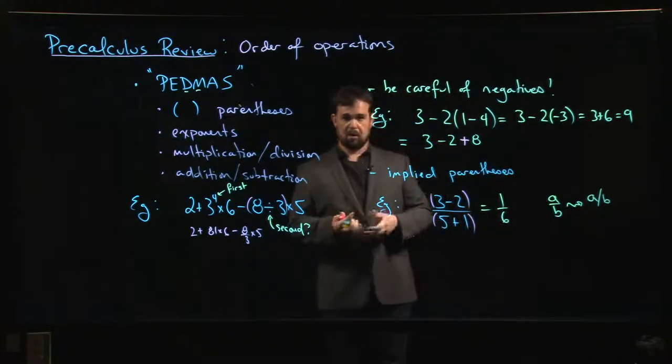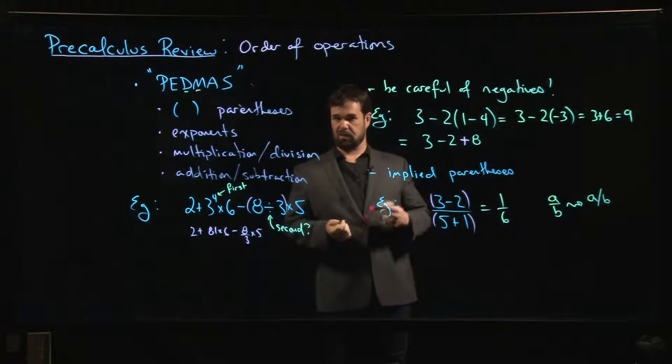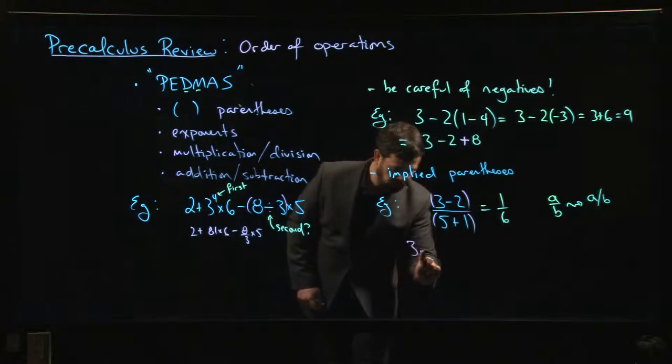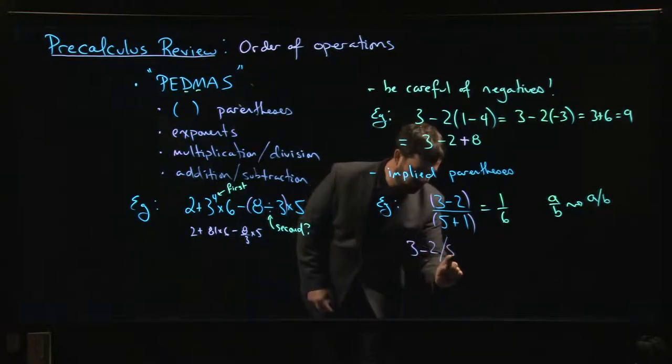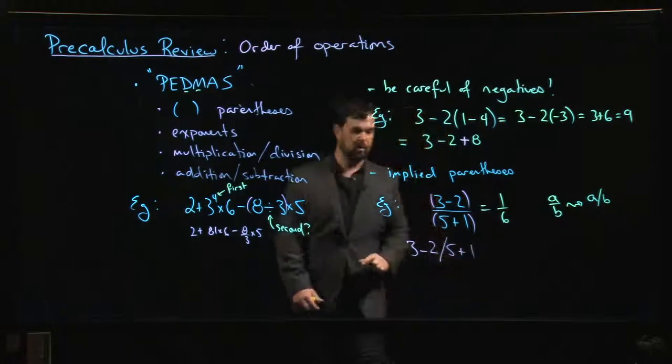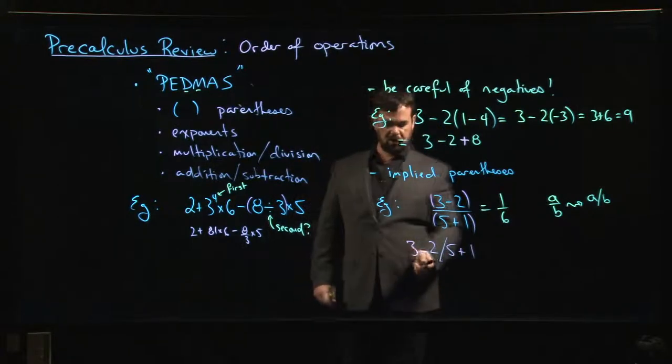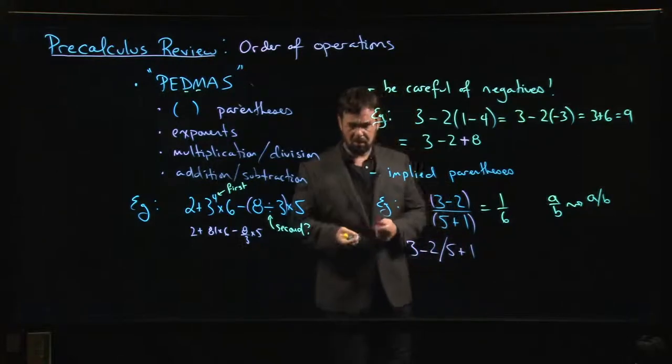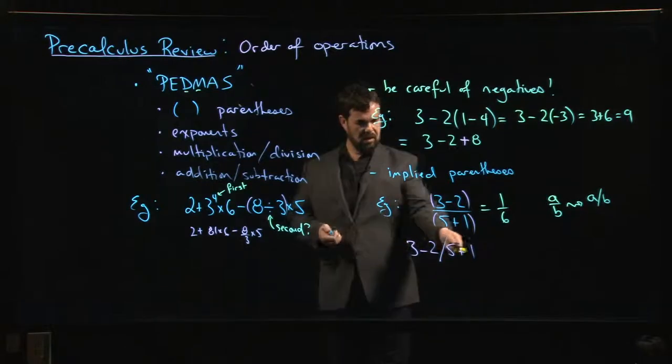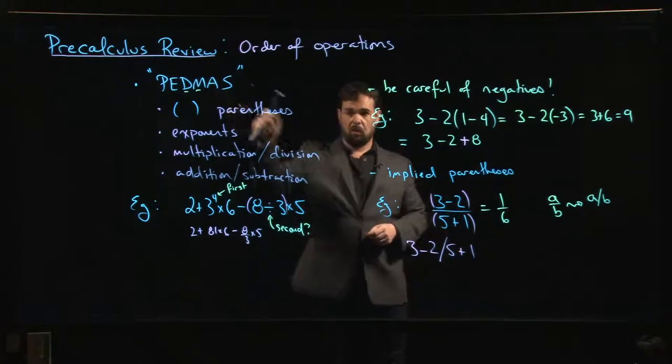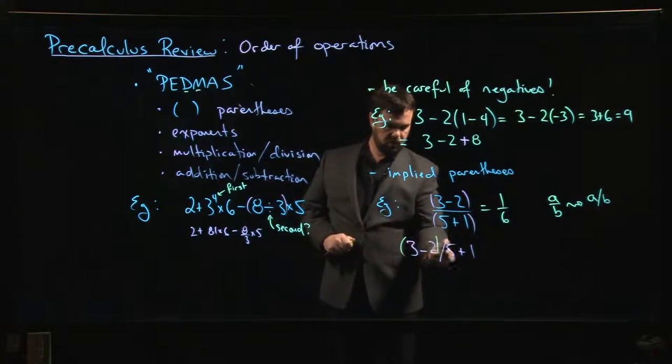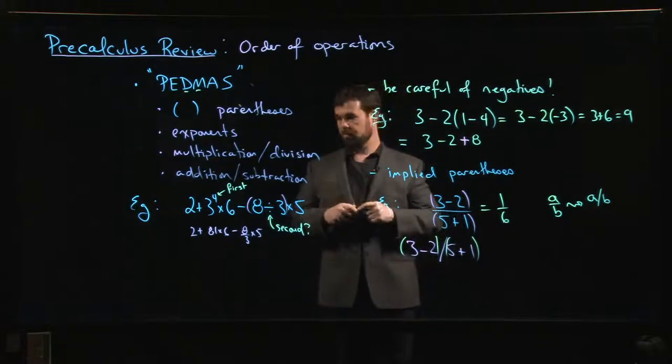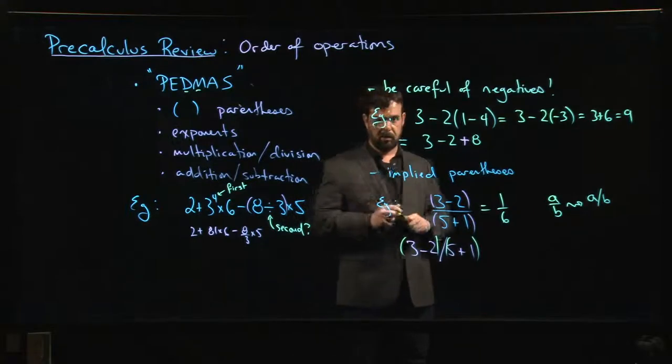Then you're doing an online homework problem, entering your answer into the computer, and it's telling you you're wrong because you typed 3 - 2 / 5 + 1. You assume the computer will know to do the subtraction and addition first, then the division. Computers don't know that. Computers are going to do exactly what you tell them and use the order of operations. You have to explicitly tell the computer by putting in brackets that it needs to do those operations first, or you'll get the wrong answer. You have to be careful about these things.